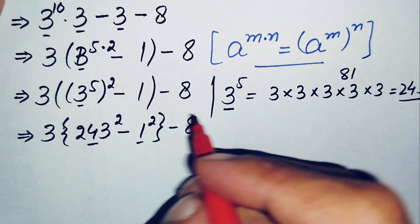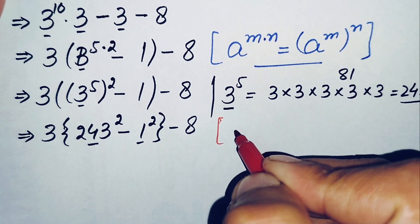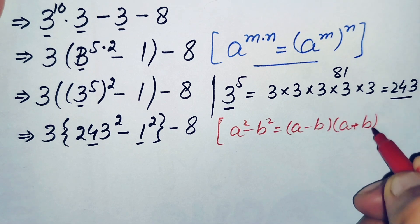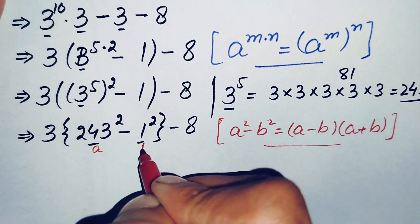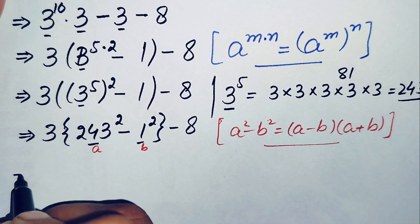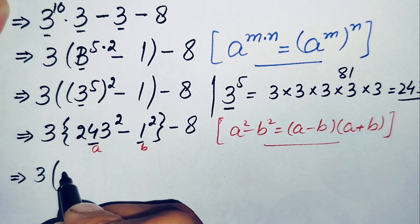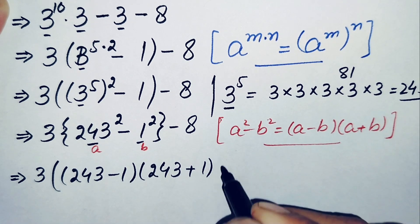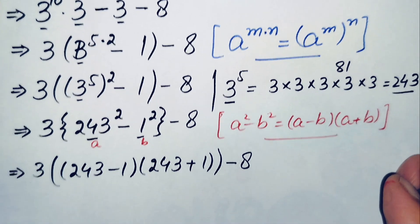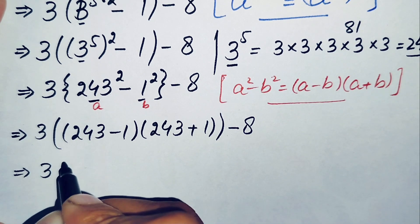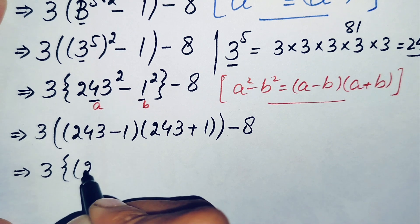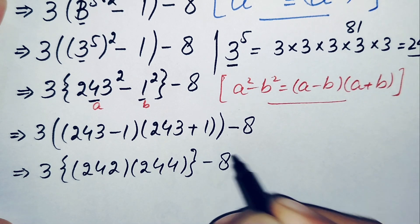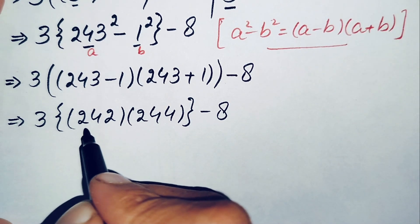We will use the algebraic identity a² − b² = (a − b)(a + b). Here a is 243 and b is 1. So this equation becomes: 3 times (243 − 1)(243 + 1) minus 8, which gives 3 times 242 times 244, minus 8.